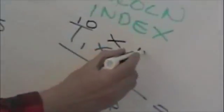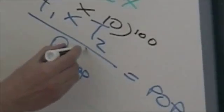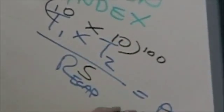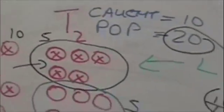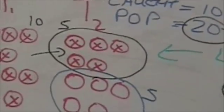It's just a formalization of that example. So he said that T1, the number that you catch on the first day, 10, times T2, the number you catch on the second day, 10. So 10 times 10 is 100. Divided by the number of recaptures, the number of recaptures here is 5, the ones that have marks on the second day. And 100 divided by 5 is 20, which is the same 20 as we had there. So that's the simplest formulation of capture-mark-recapture statistics.